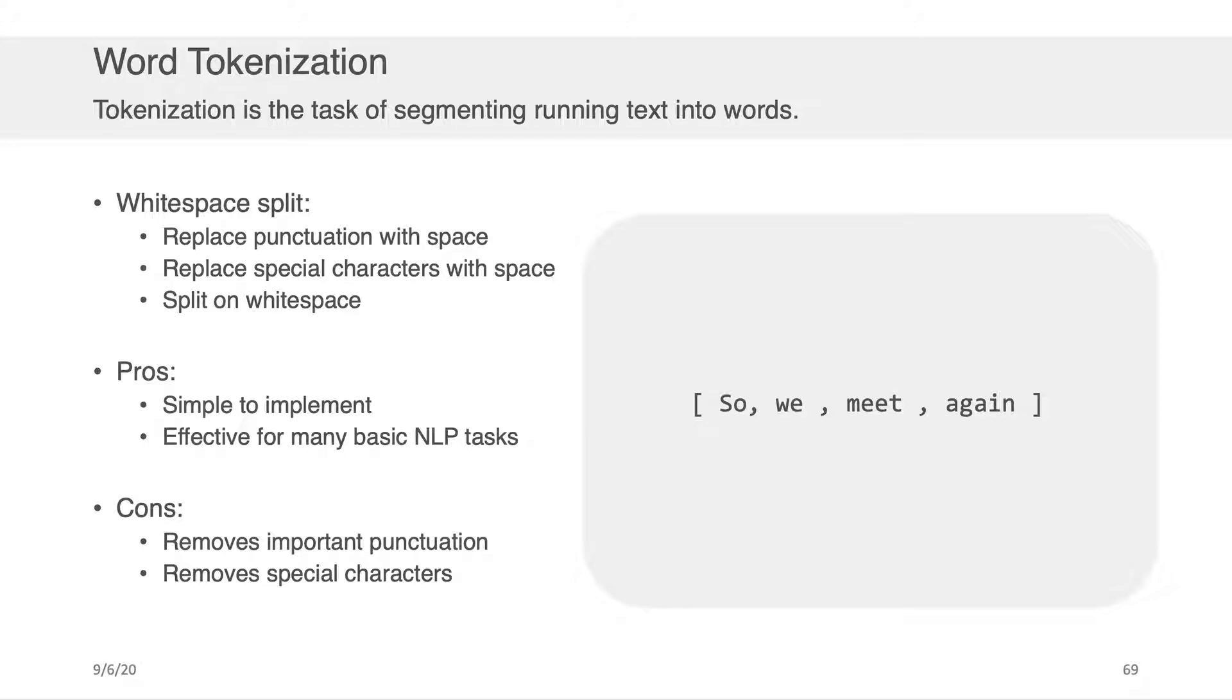So the pros of this approach are that it's very simple to implement and it's actually effective for a surprisingly large number of basic NLP tasks. You could, for example, recreate the results from Zipf's law that we discussed earlier by simply tokenizing your text this way and then counting the frequency of the words and so on. Of course, the con of this approach is that it does remove important or potentially important punctuation and special characters as we're going to see with this example.